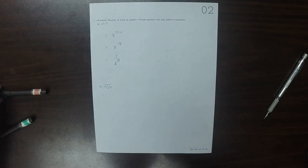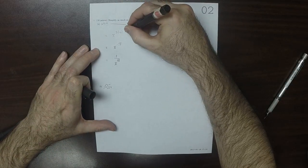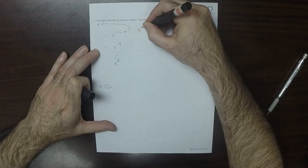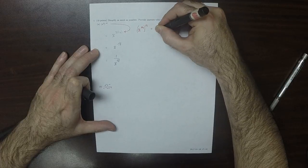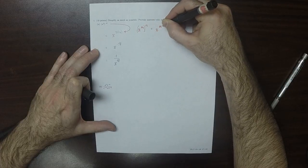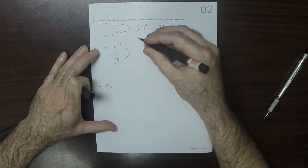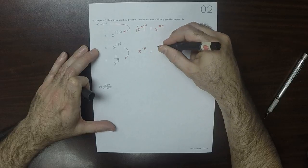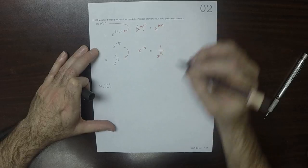What was used in this step was that x to m to n is x to mn, and what was used in this step is x to negative n is 1 over x to n.